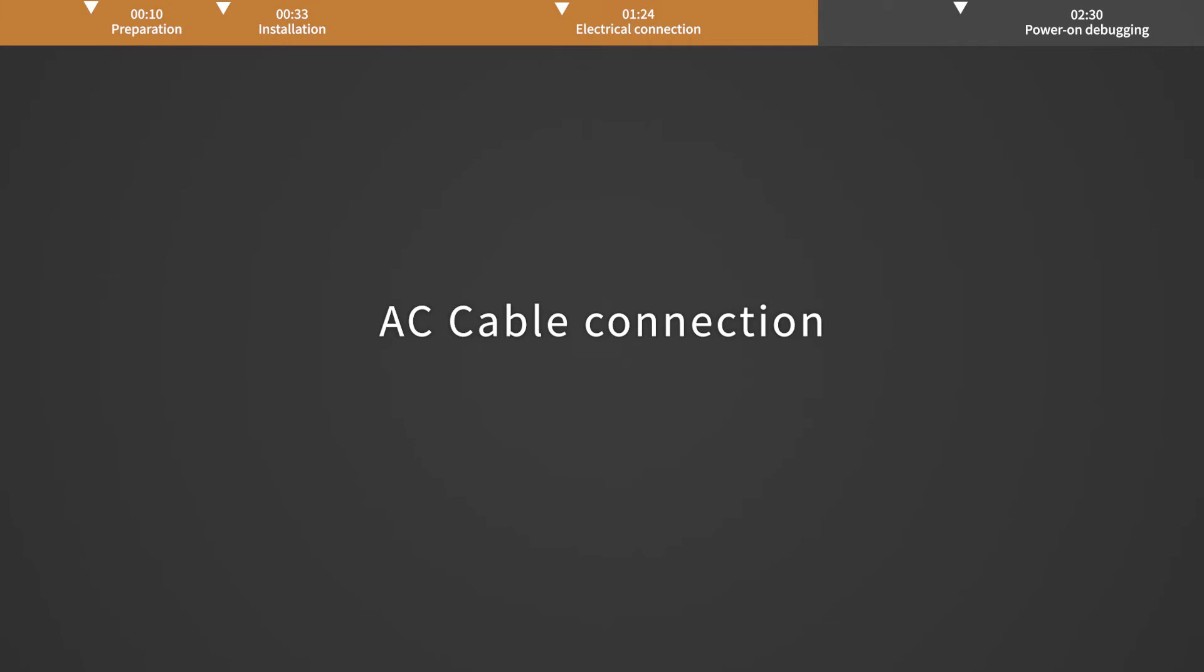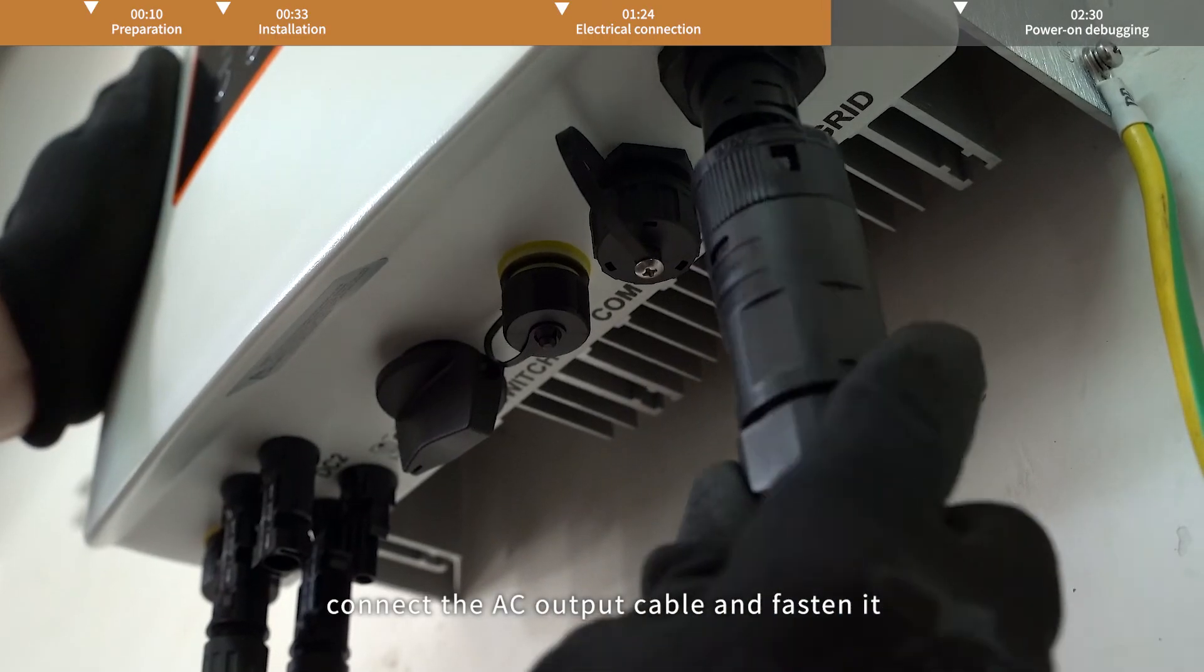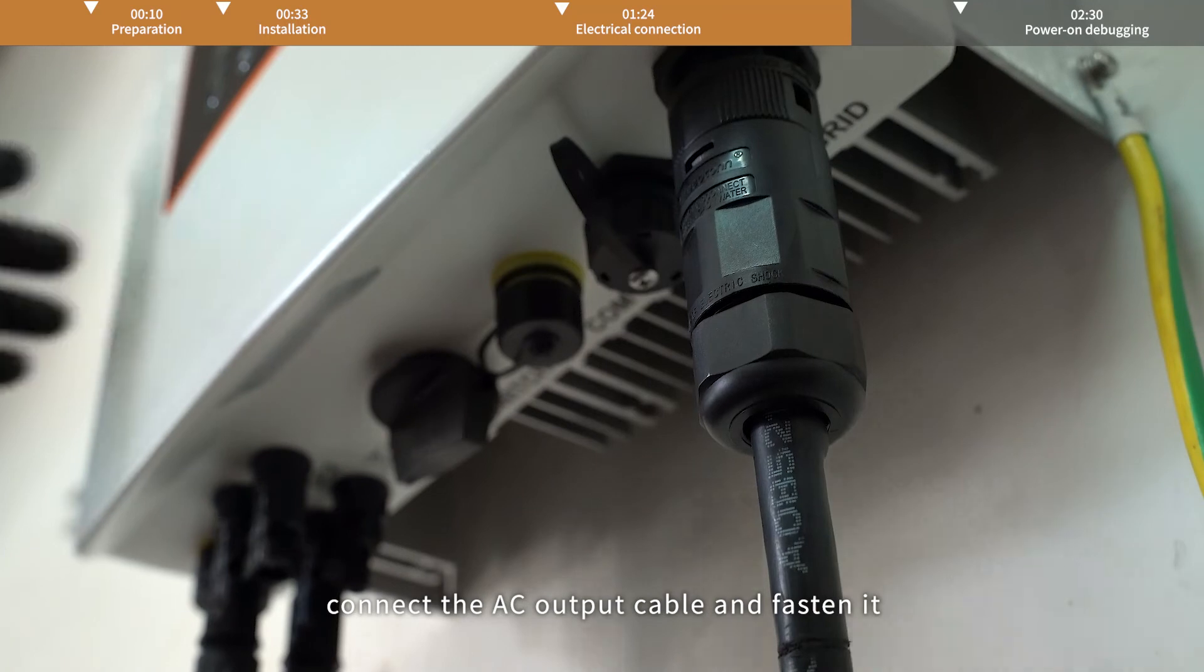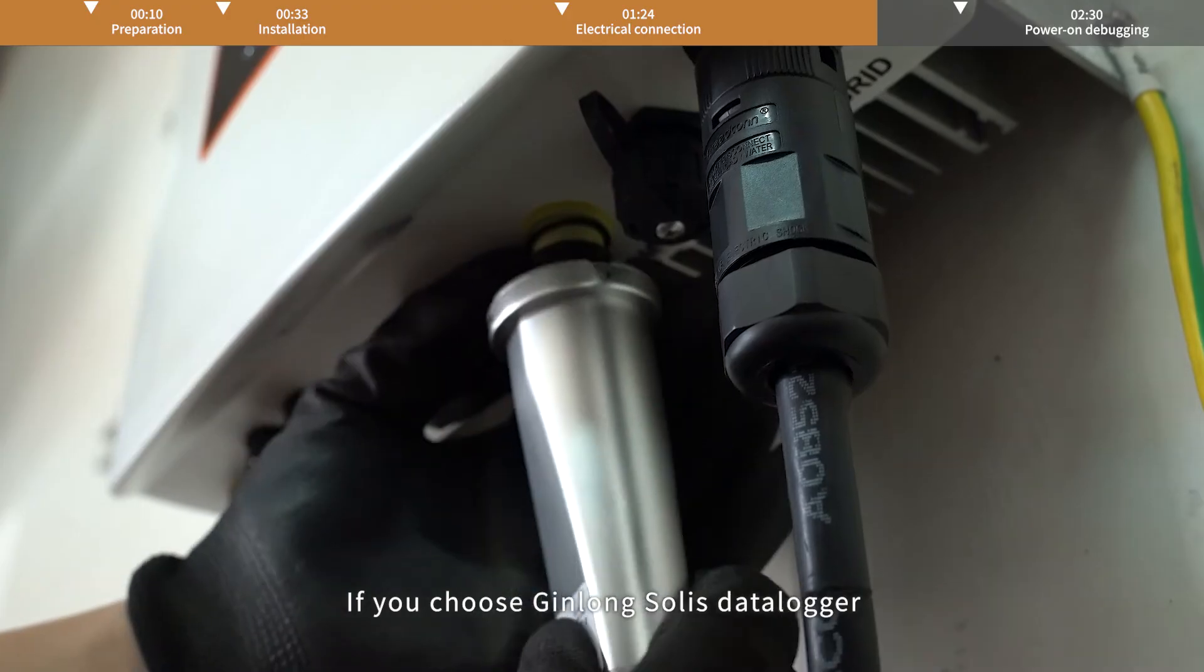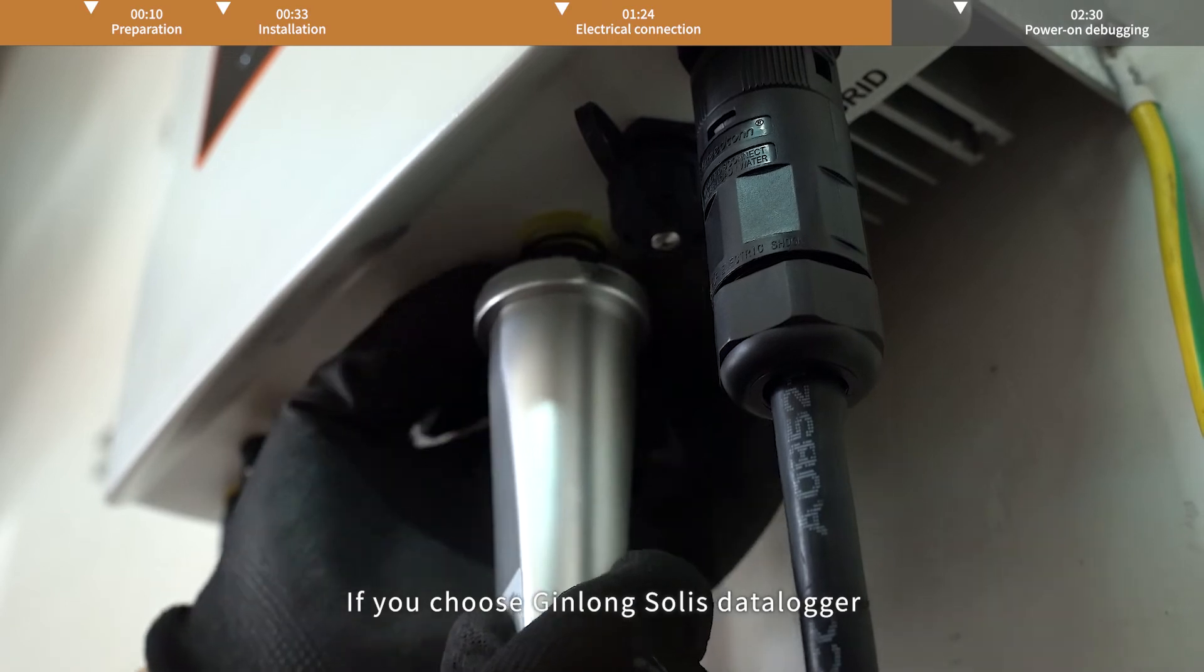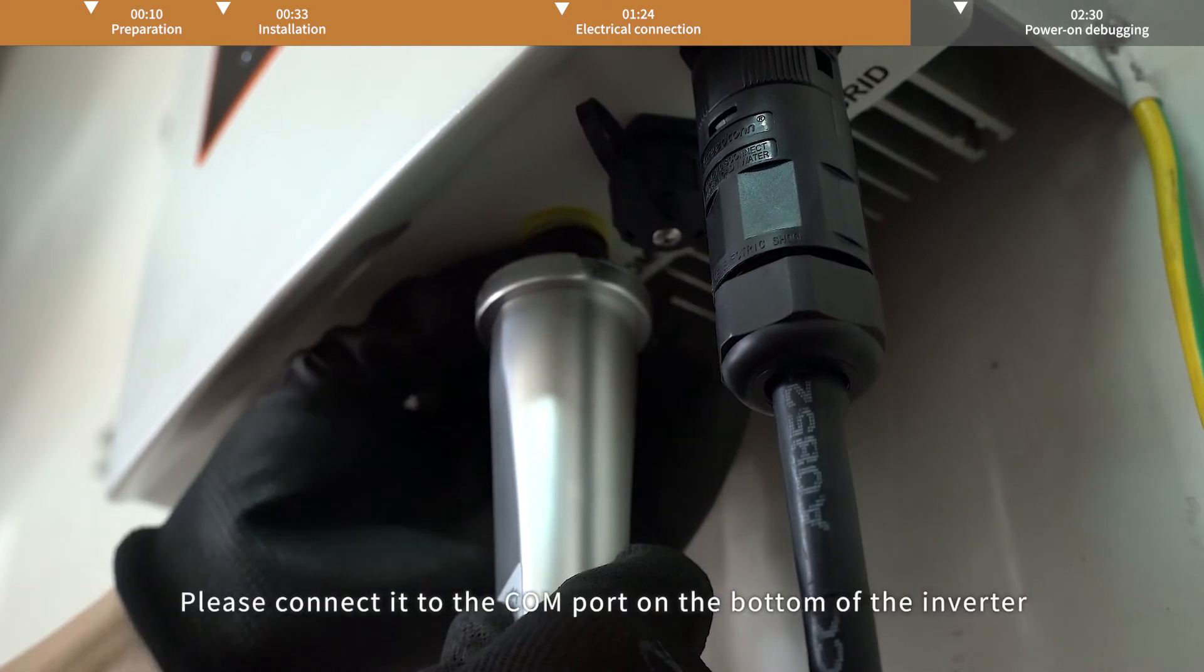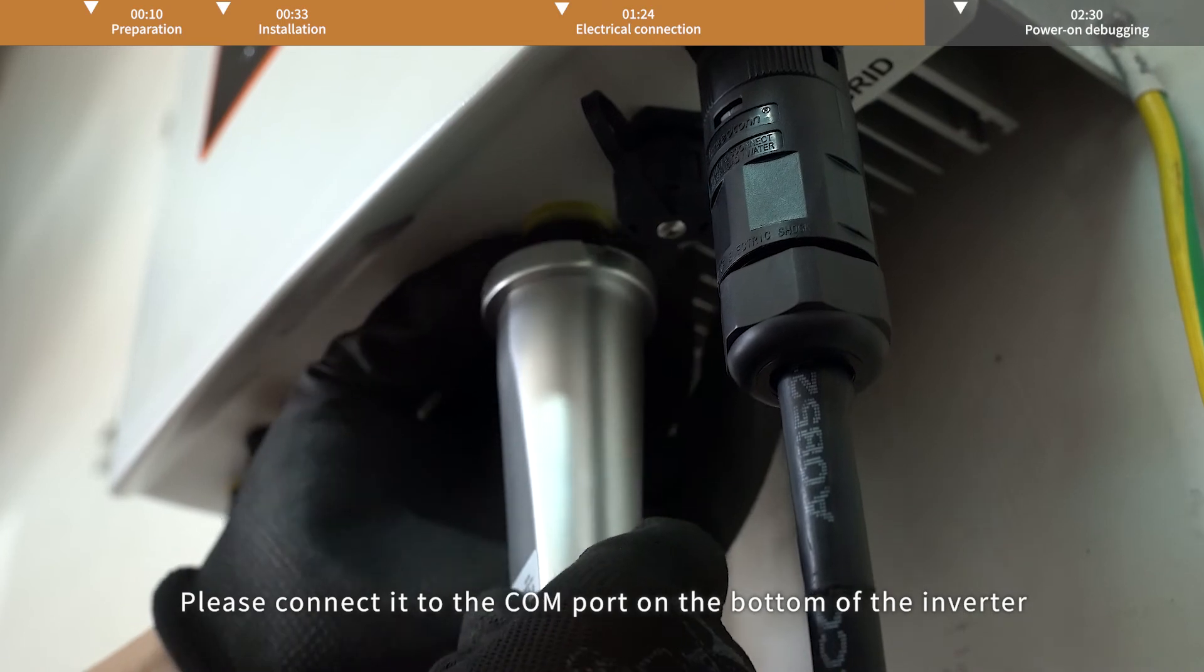AC cable connection. Connect the AC output cable and fasten it. Data logger connection. If you choose Ginlong Solis's data logger, please connect it to the input cable and cord on the bottom of the inverter.